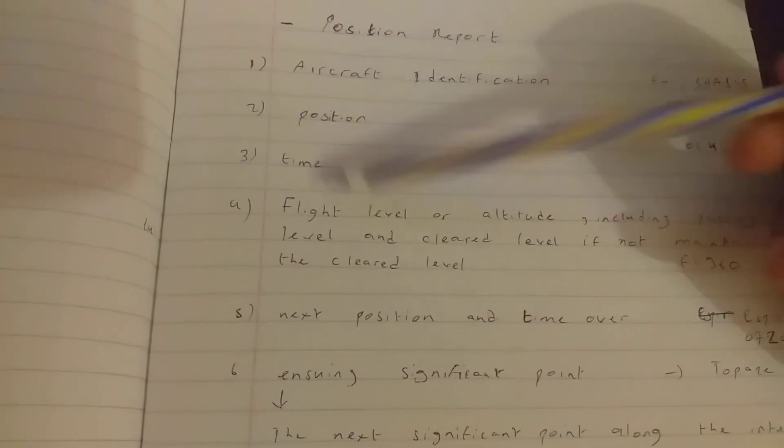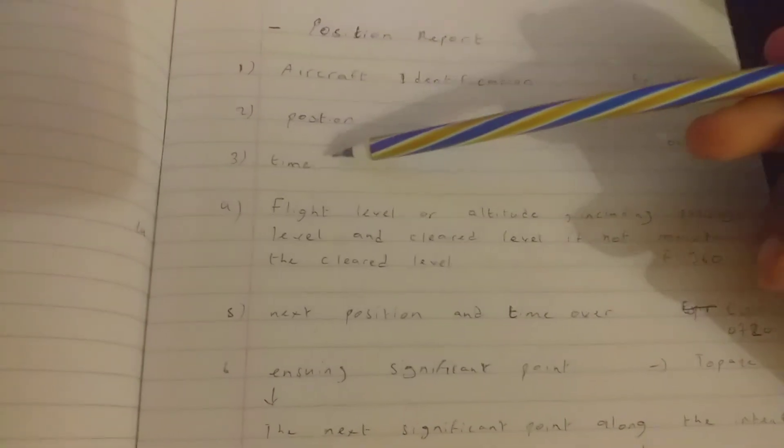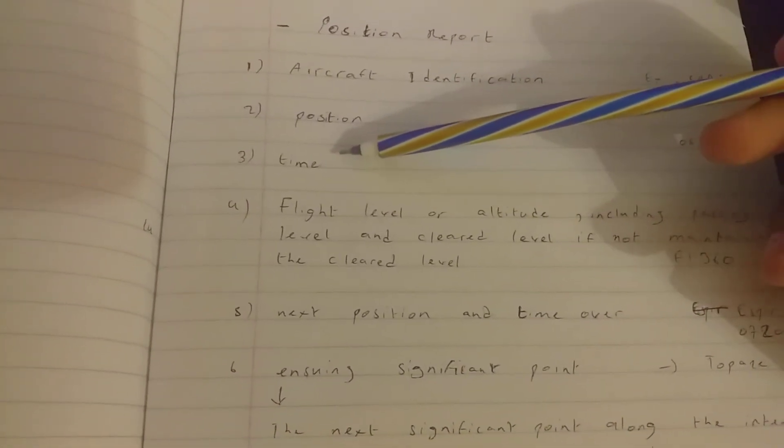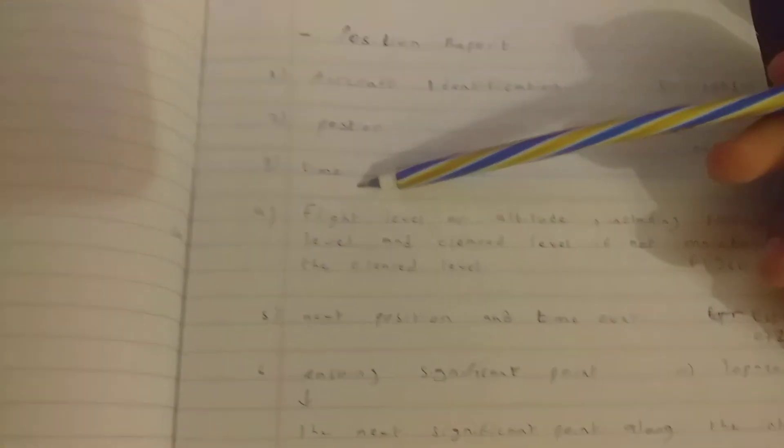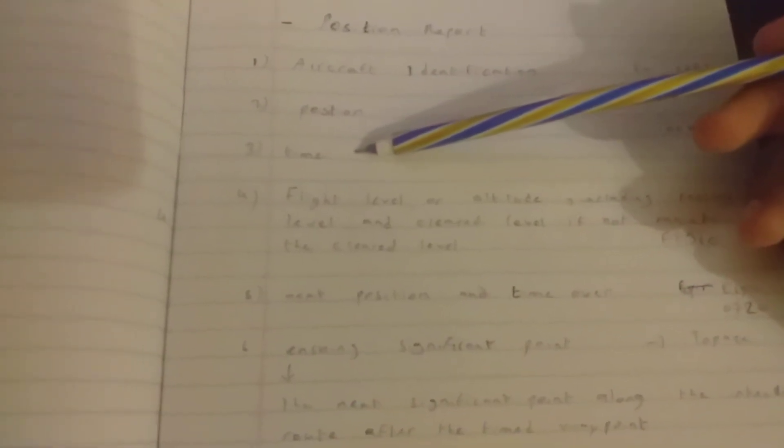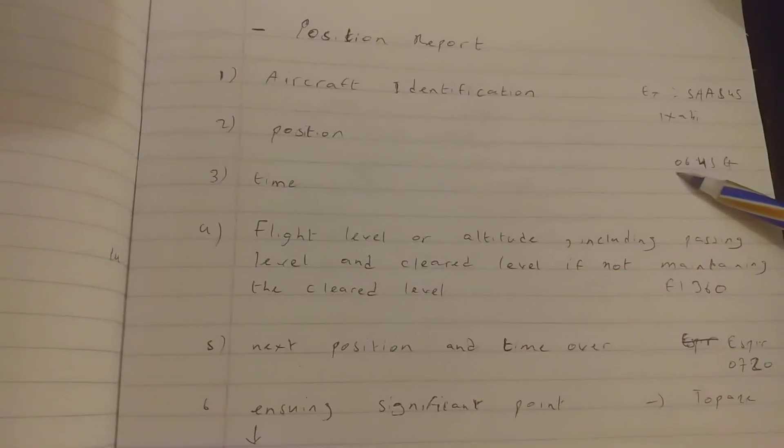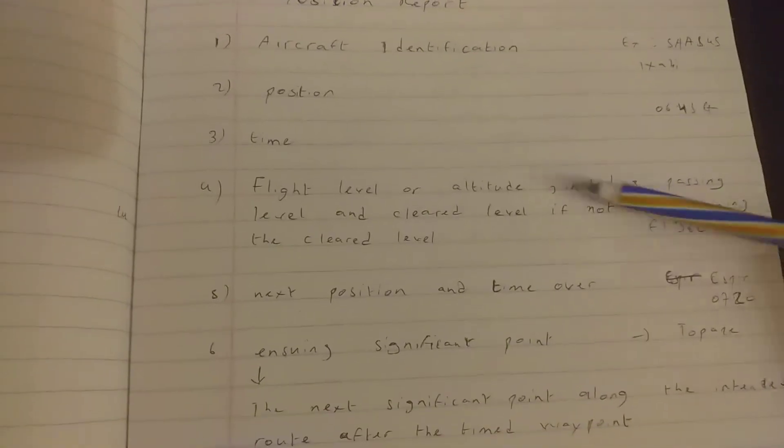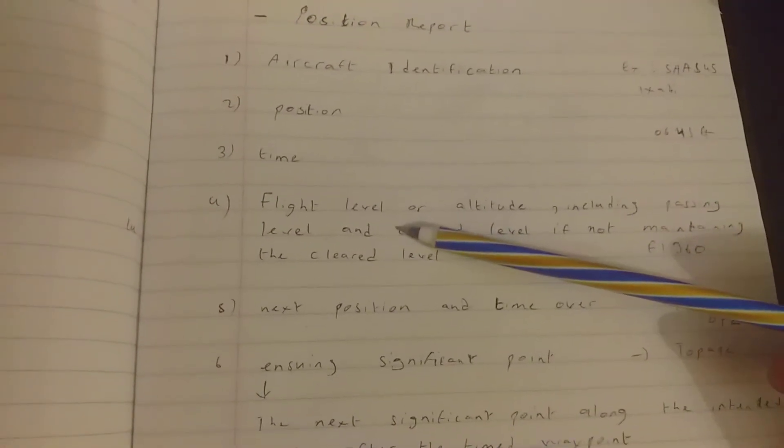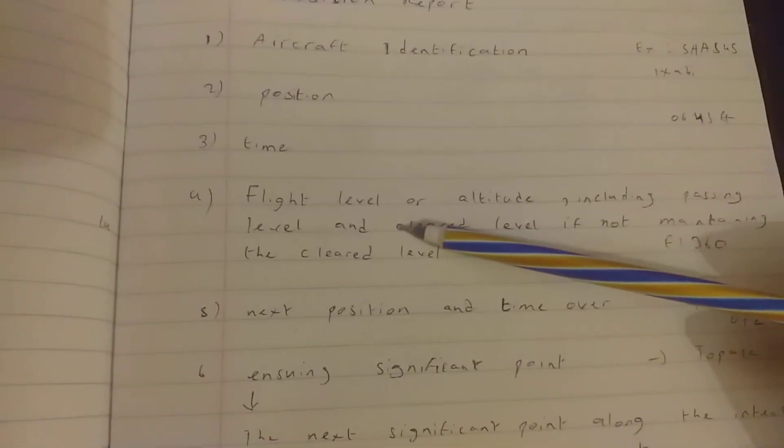But he is passing, for example, Xabi, and time would be the time he posts with a point or cross the point abeam the point. It will give you, we take an example of 0645. The flight level, if he is maintaining a flight level or passing a flight level or clear the flight level.